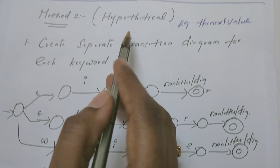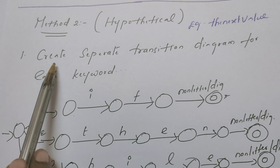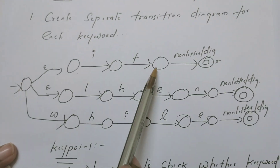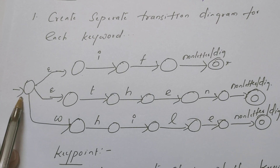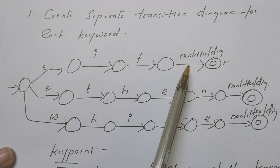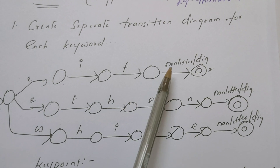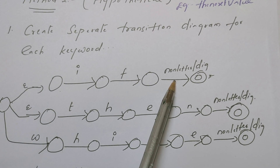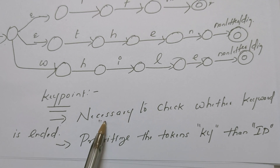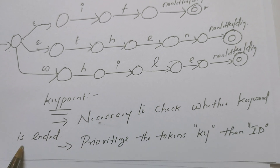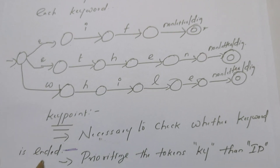Now let us move on to method two. Method two is a hypothetical method — it is not in practice. It asks us to create a separate transition diagram for every keyword: for IF, for THEN, for WHILE, and so on, all sharing one common start state. After every keyword, we confirm it is not followed by any letter or digit, because if it is, it becomes an identifier. We must confirm the keyword is completely ended and not followed by any digit or non-letter.